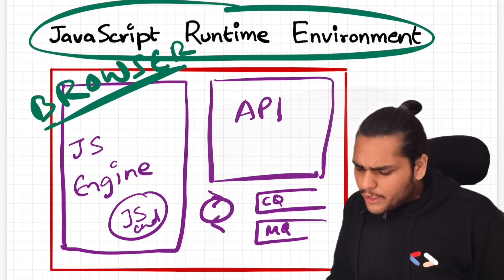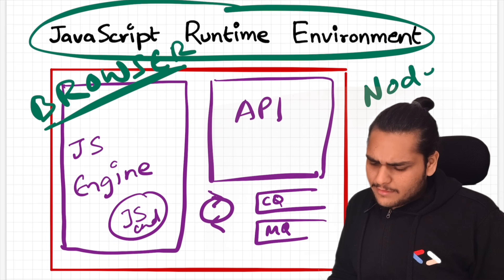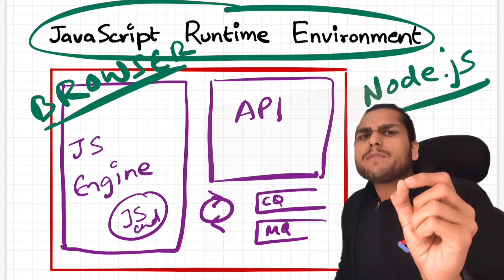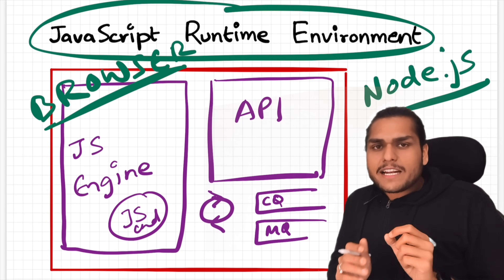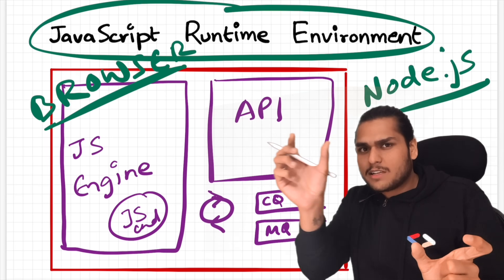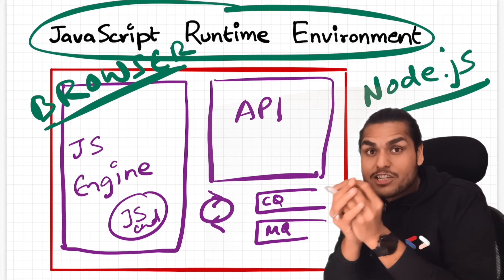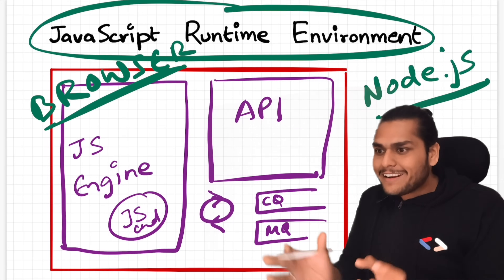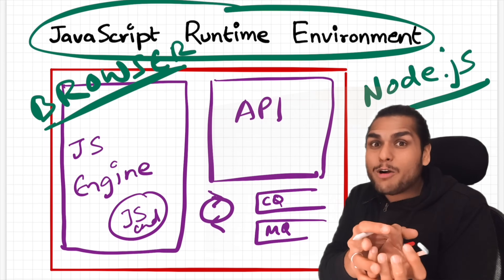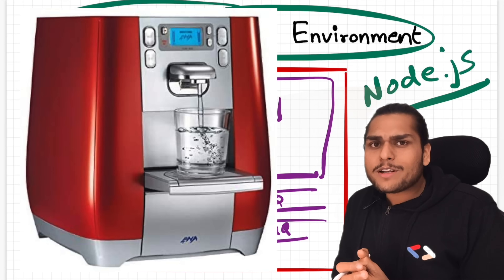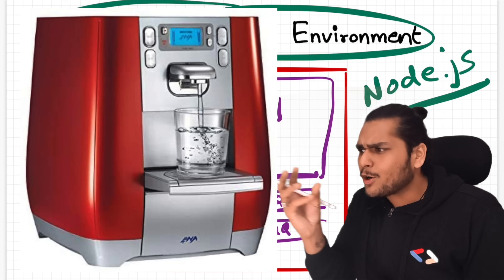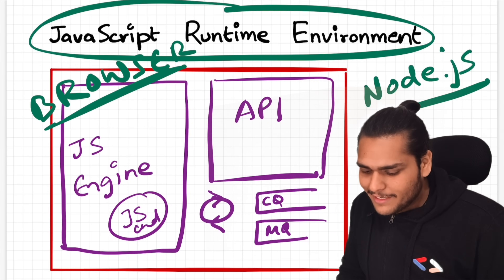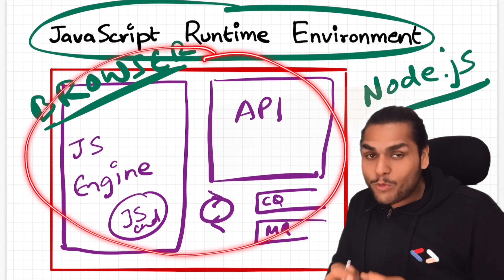You must have definitely heard of the famous Node.js. Node.js also has a JavaScript runtime environment, and if you Google Node.js you will find out that it is an open-source JavaScript runtime — that means it has everything required to run a JavaScript piece of code outside the browser. If we want to run JavaScript in a water cooler, all we need is the JavaScript runtime environment.